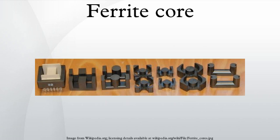In electronics, a ferrite core is a type of magnetic core made of ferrite on which the windings of electric transformers and other wound components such as inductors are formed. It is used for its properties of high magnetic permeability coupled with low electrical conductivity. Because of their comparatively low losses at high frequencies, they are extensively used in the cores of RF transformers and inductors in applications such as switched-mode power supplies and ferrite loop stick antennas for AM radio receivers.